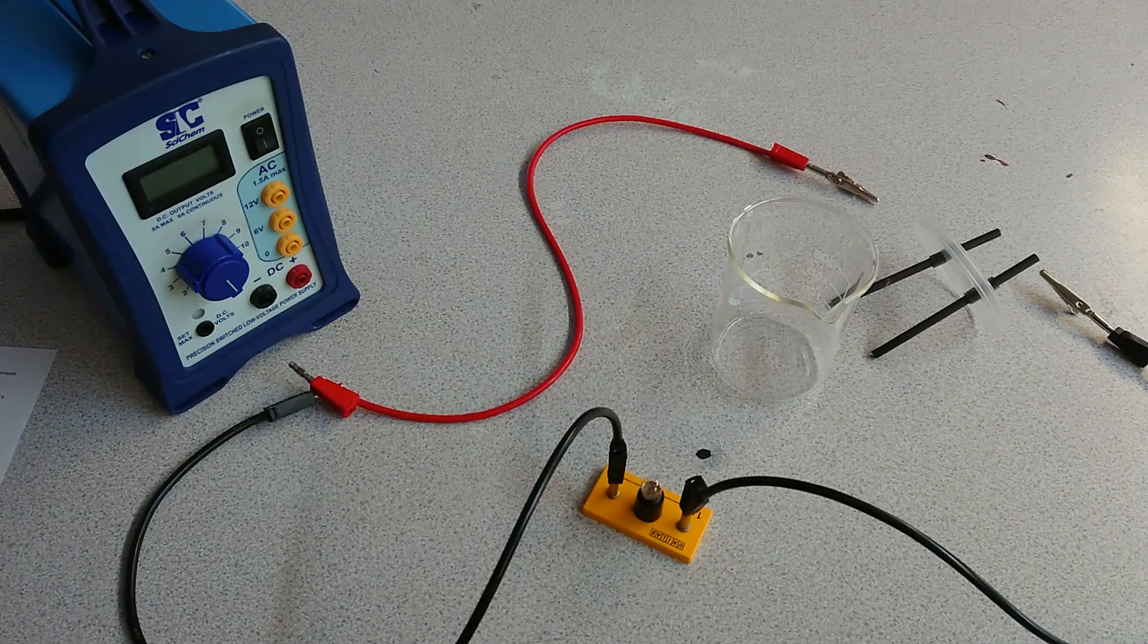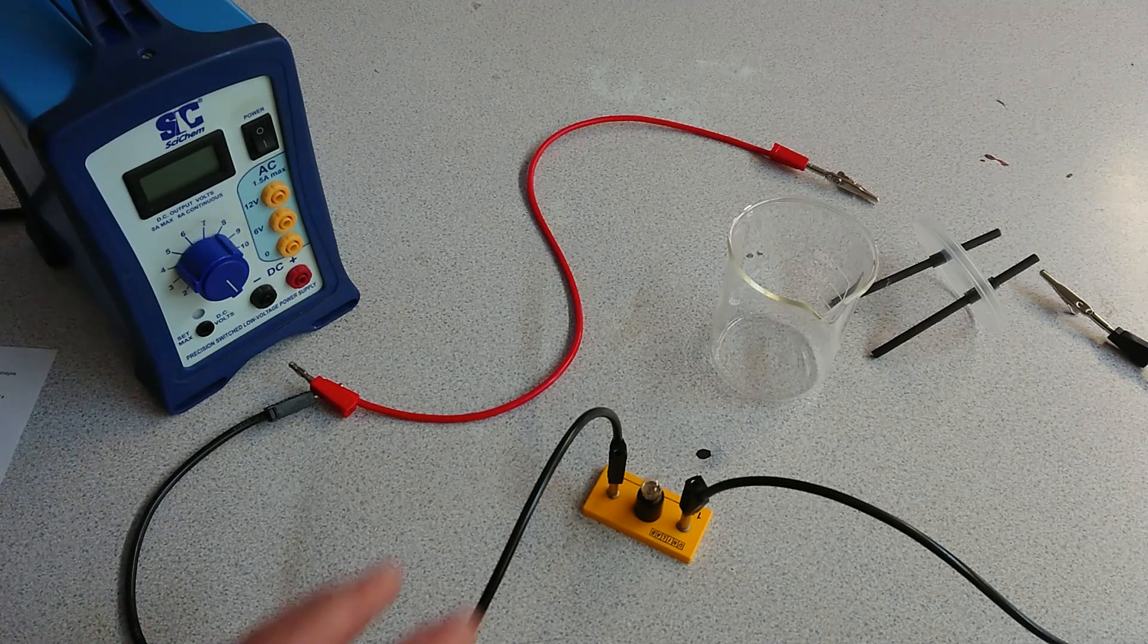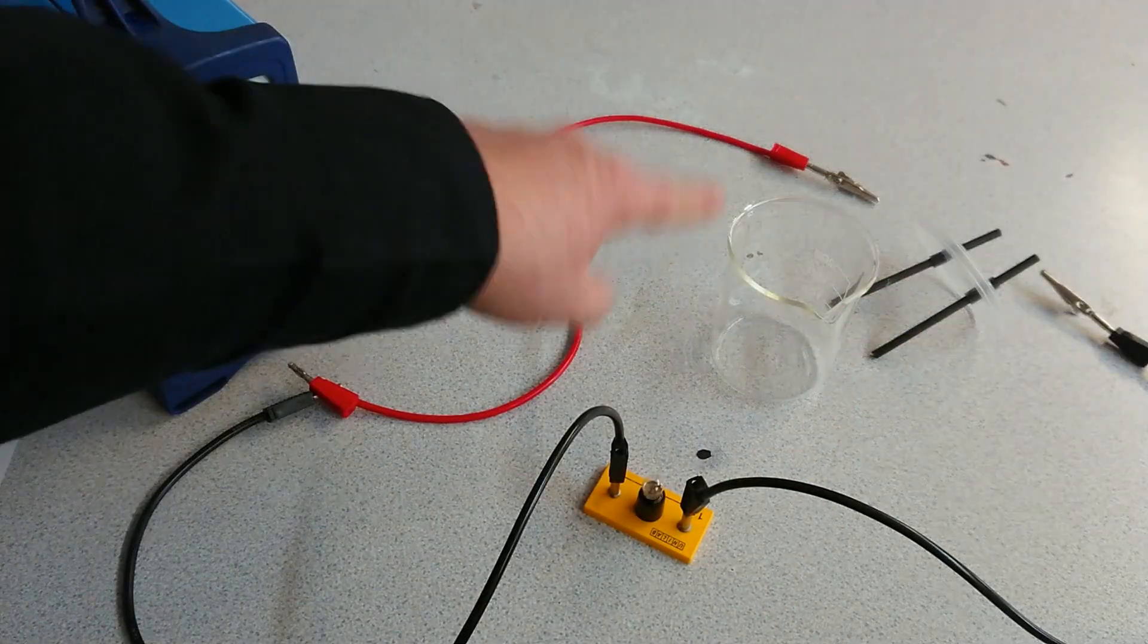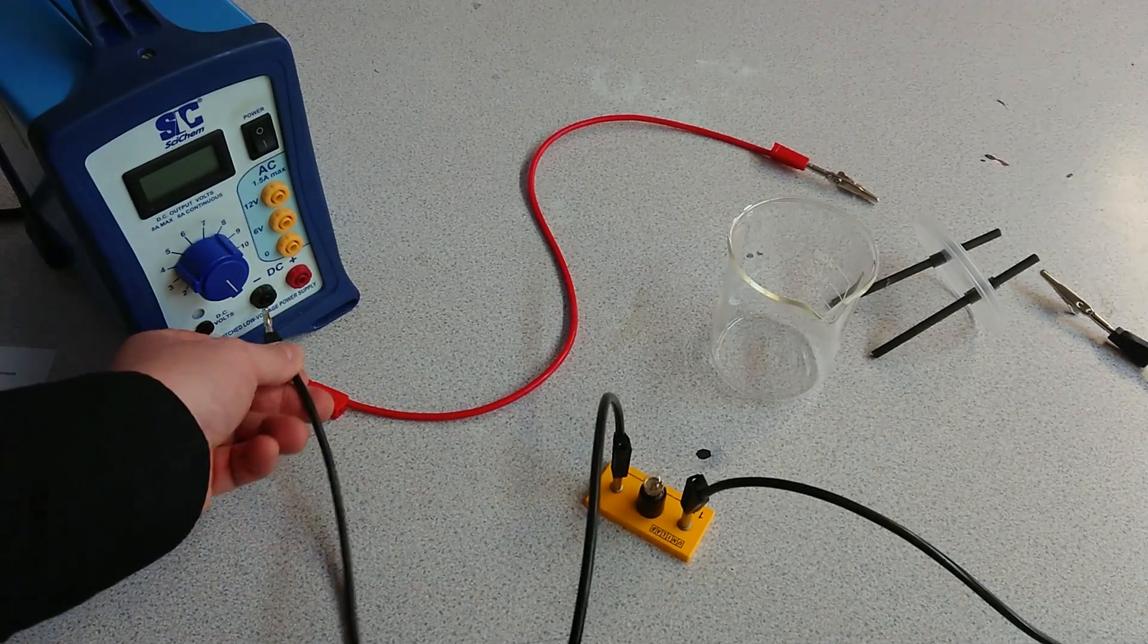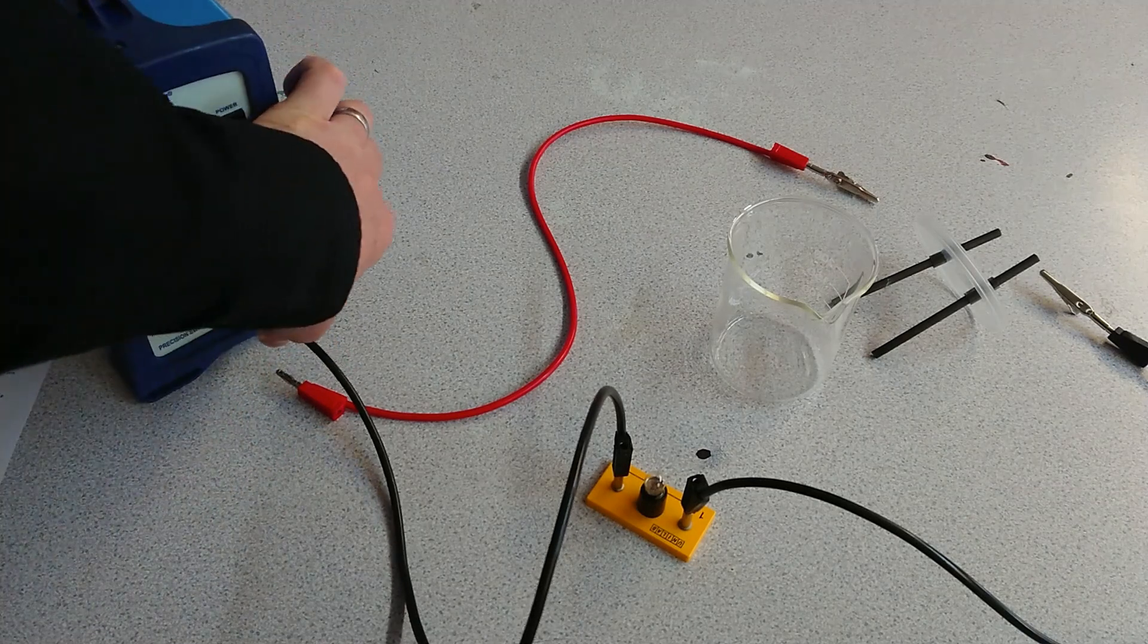Here's the equipment that we need: our power supply, our wires, our lamp, our electrodes, and our beaker. We're just going to connect up the circuit. Remember, always start at one side of the circuit. From our power supply we go to our lamp, from our lamp we come round to our electrode.